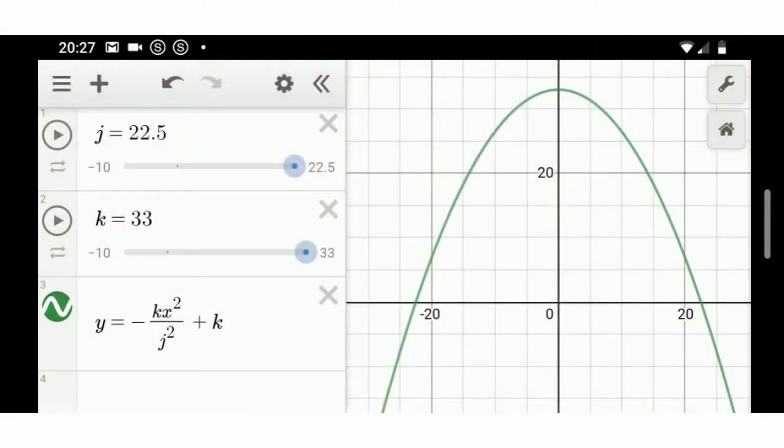And then set up Desmos like this: j is 22.5, that's my distance to the root, plus and minus doesn't matter. K is 33. And below that you can see I've written an equation, y equals negative kx squared over j squared plus k.